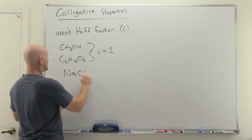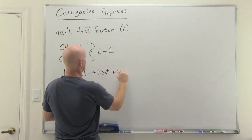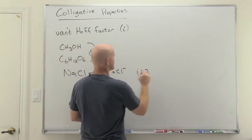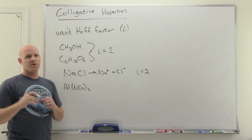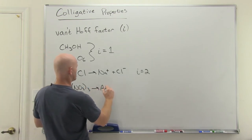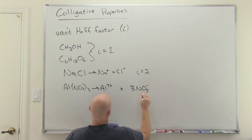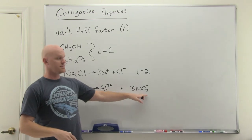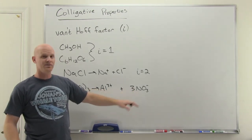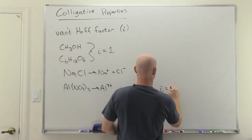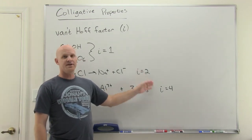For strong electrolytes that completely dissociate, the Van't Hoff factor equals the number of ions produced. NaCl dissociates into one Na⁺ and one Cl⁻ — two total ions, so i = 2. For Al(NO₃)₃, you get one Al³⁺ and three NO₃⁻ ions (polyatomic ions don't break apart further) — four total ions, so i = 4. What matters is the total concentration of all dissolved species.